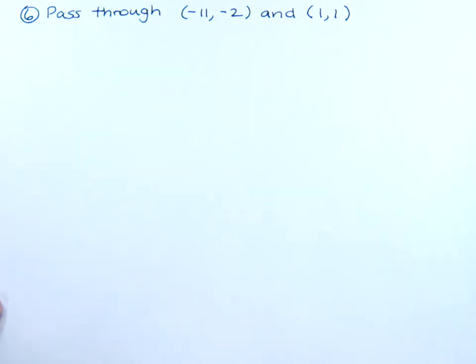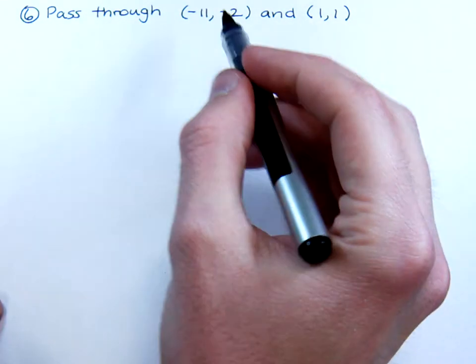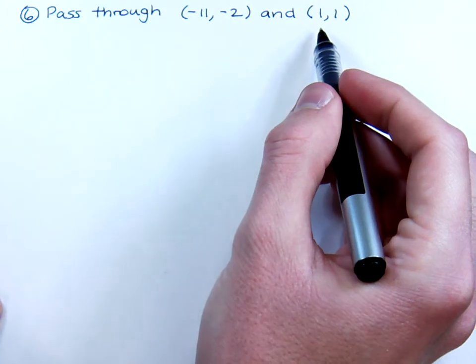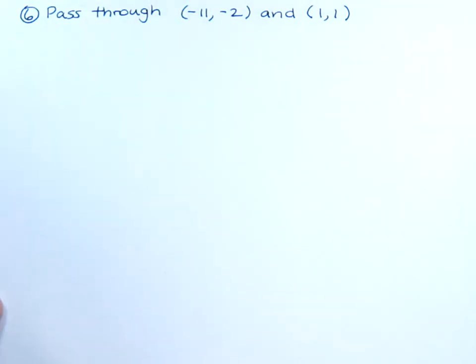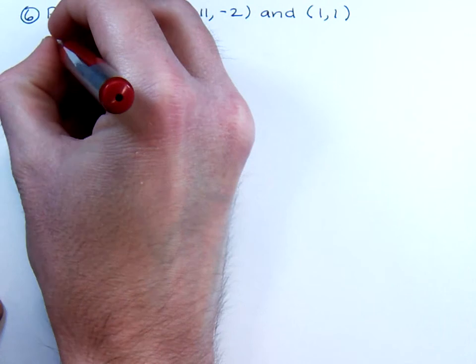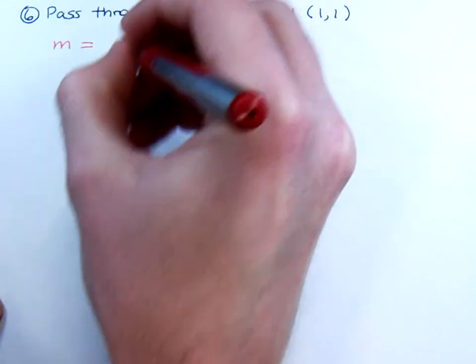All right, let's try another example of a line that's passing through two points. Again, I'm not giving you the slope, but we can still use the formula for slope in order to find an equation for this line.